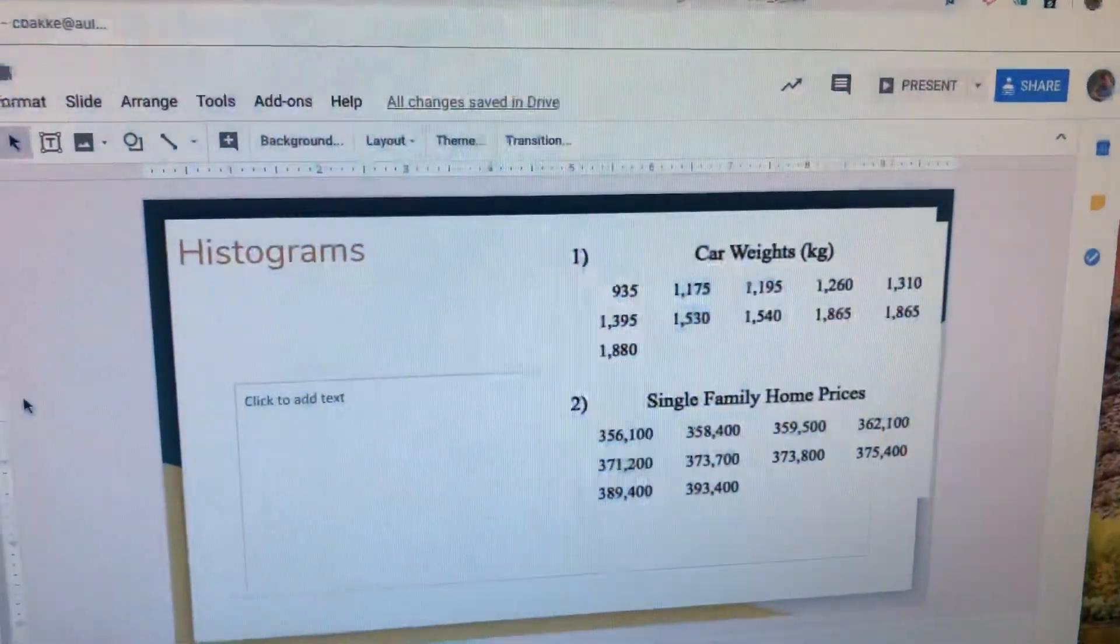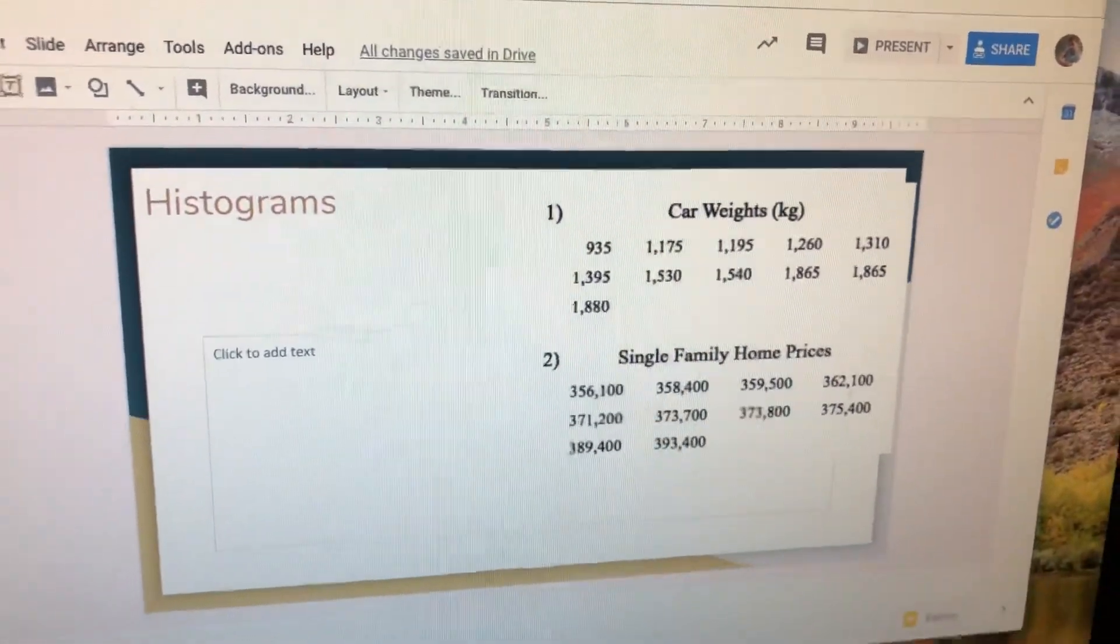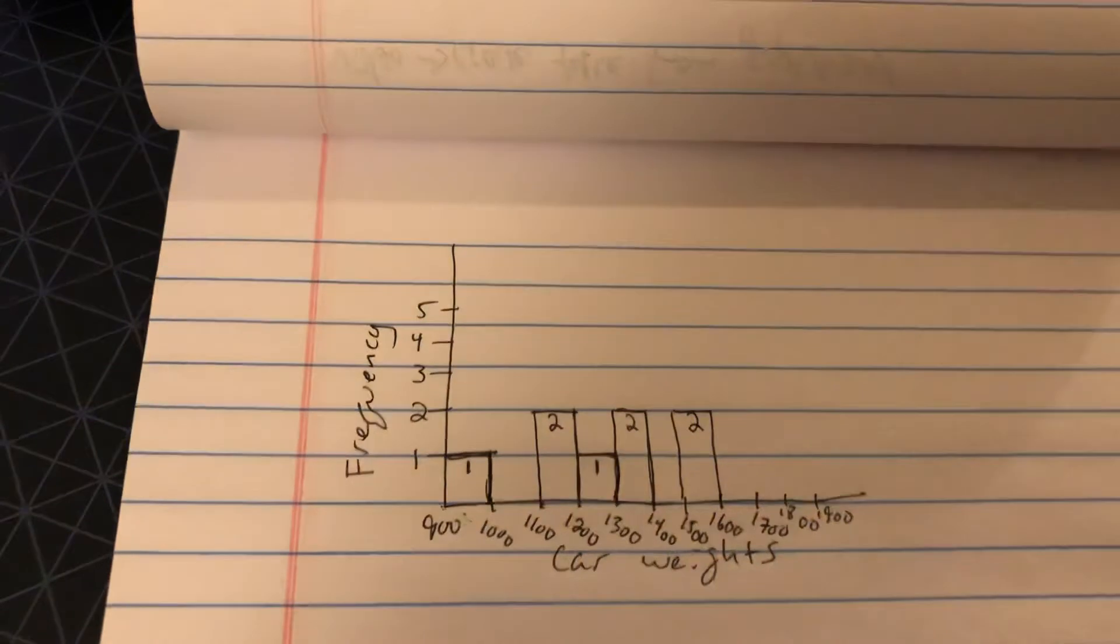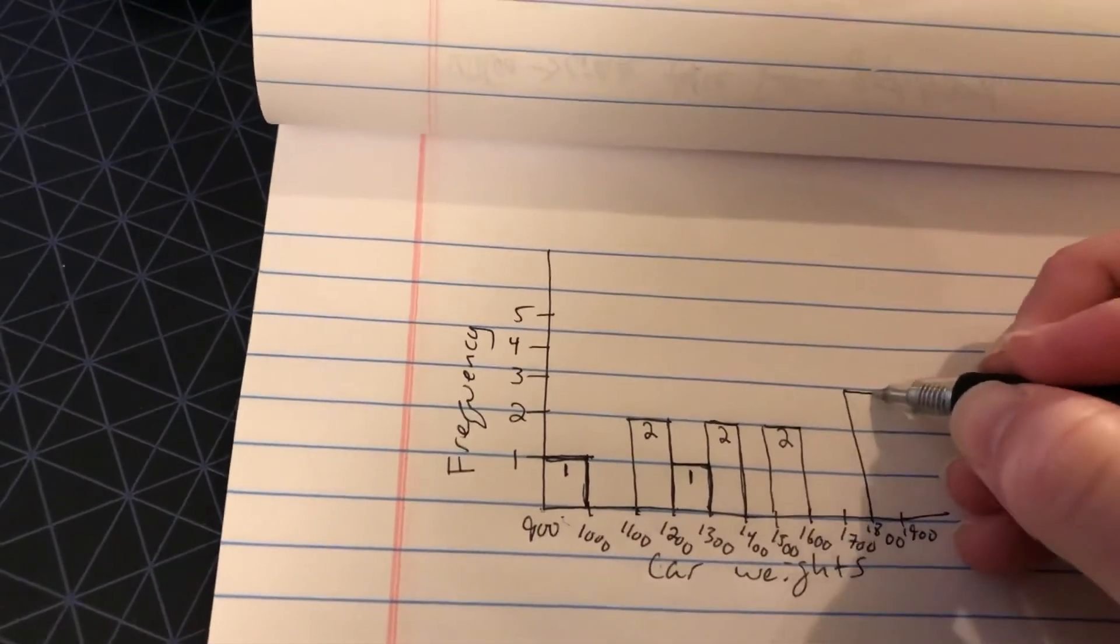And then I have nothing between 1,600 and 1,700. And then I have one, two, three cars in between 1,800 and 1,900. So between 1,800 and 1,900, we're going all the way up to three.